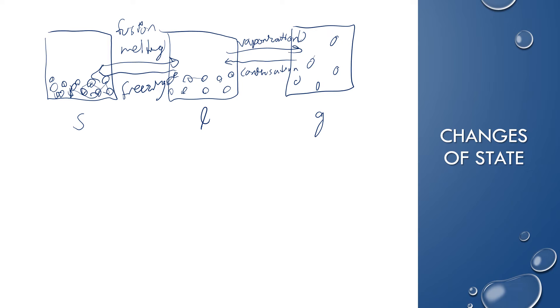So, these changes of state on the top are considered endothermic. Endo, think of like enter. So, endothermic is when the heat is going in. So, in order for a solid to a liquid, it has to absorb heat energy. Which makes sense, because the liquid particles are moving faster. They have to have more energy. For a liquid to a gas, it has to absorb energy. Again, to break the intermolecular forces and to cause it to escape as a gas. And the particles are moving faster.